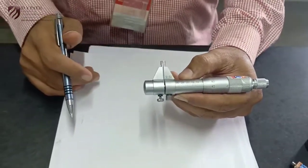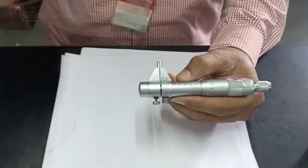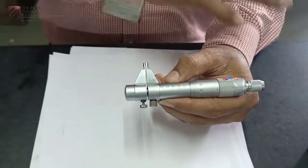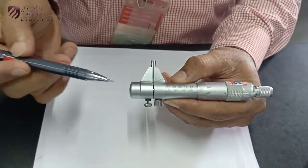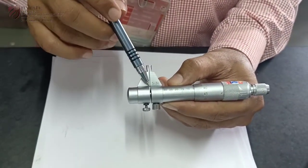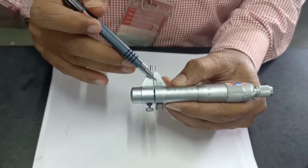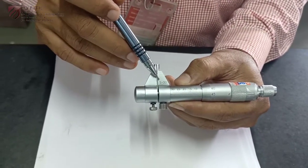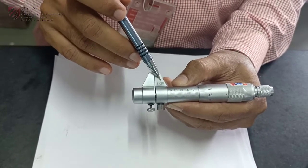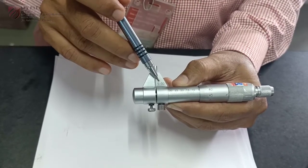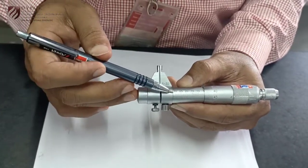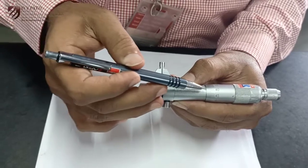In case of inside and depth micrometer, the scales are exactly opposite to that of outside micrometer. For example, if you see here, this is the first range of inside micrometer which starts with 5 to 30. The span is 25 only. It starts with 30 and it ends at 5.